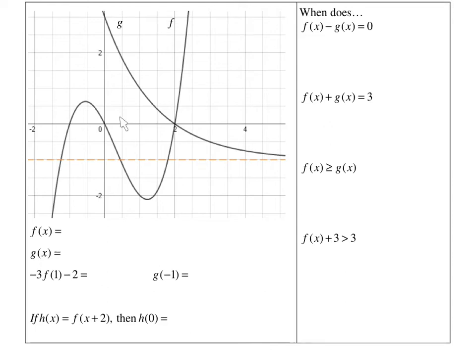For this particular problem, we have two functions. We have f, which is this right here — hopefully you can tell that's a cubic equation by the way it looks. Can you see the zeros here, here, and here? And then you have g right here, which is this one. It has this horizontal asymptote — hopefully you can tell that's an exponential decay graph. That is important later on in the problem.